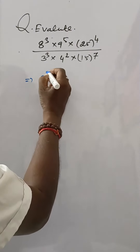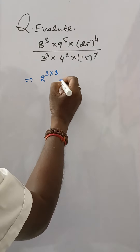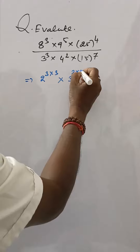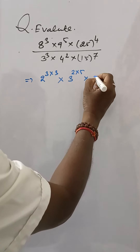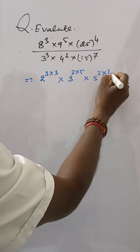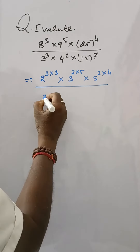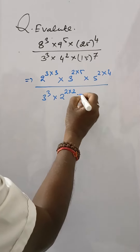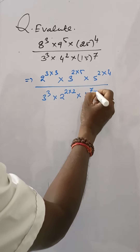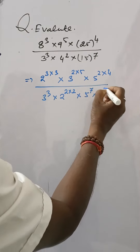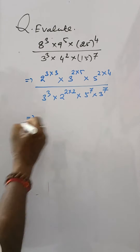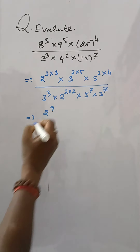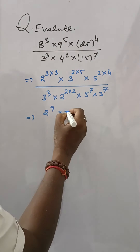This equals 2 to the power 3 into 3 into 3 to the power 2 into 5 into 5 to the power 2 into 4, divided by 3 to the power 3 into 2 to the power 2 into 2 into 5 to the power 7 into 3 to the power 7.